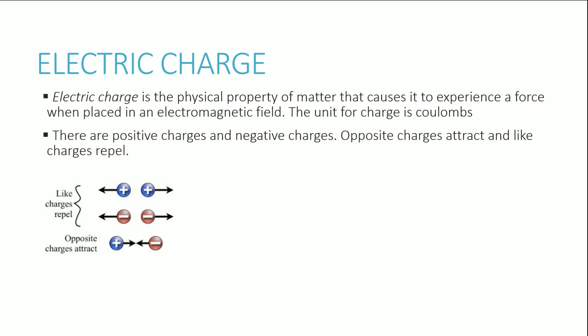Opposite charges will always attract, sort of like opposite poles of a magnet attracting each other. And like charges repel, just like how like poles repel in a magnet. Here is a diagrammatic representation of that. You have two like charges — positive and positive, or negative and negative — and they will always go away from each other because they repel. Opposite charges, for example positive and negative, will attract, and you can see the direction of those arrows here.